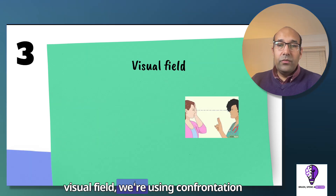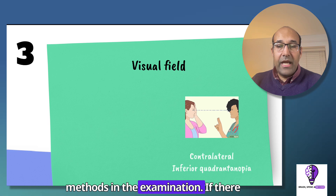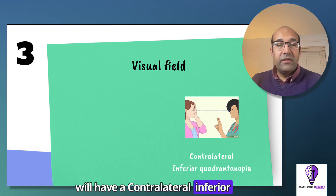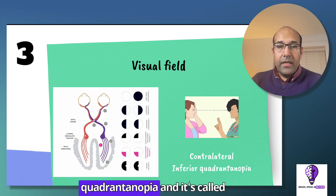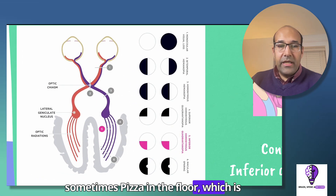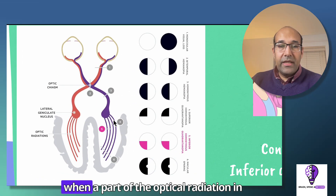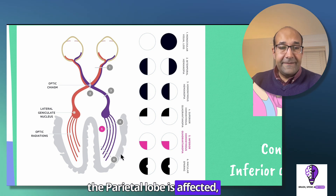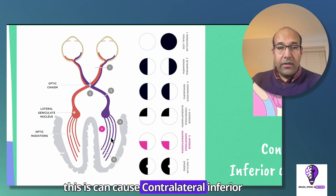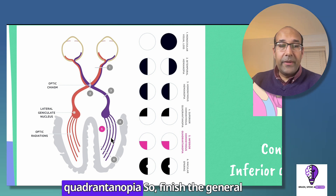In the visual field, we use the confrontation method in the examination. If there is an affection of the parietal lobe, we will have a contralateral inferior quadrantanopia, sometimes called 'pie in the floor.' This occurs when part of the optic radiation in the parietal lobe is affected, which can cause contralateral inferior quadrantanopia.